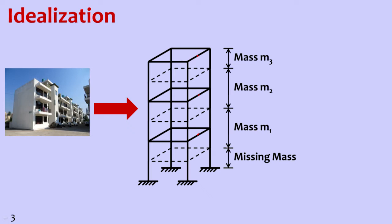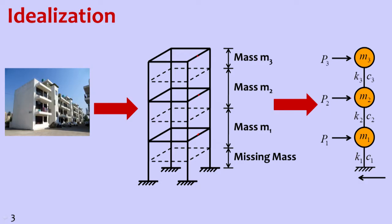Mass 1 can be calculated by the summation of the weight of the first floor slab, beams at first floor slab level, half the column weight of the first floor and half the column weight of the second floor, plus half the weight of wall load. All put together gives W1, and dividing by gravity gives mass 1. Similarly, mass 2 comes from weight of slab 2 plus beams at second floor level, half the column weights from both second and third floors, and half the wall loads. Dividing by gravity gives mass 2.